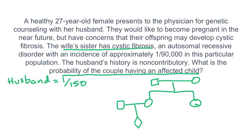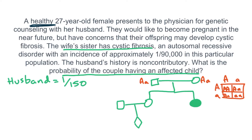The wife has a sister who has cystic fibrosis, so we can add this to the pedigree. Her parents must have both been carriers because this is an autosomal recessive condition. Because the wife is healthy and does not have symptoms of cystic fibrosis, we can eliminate one possibility from the Punnett square. She's not little a little a, leaving three possibilities: the probability of her being big A big A is 1 over 3, and the probability of her being big A little a is 2 over 3.